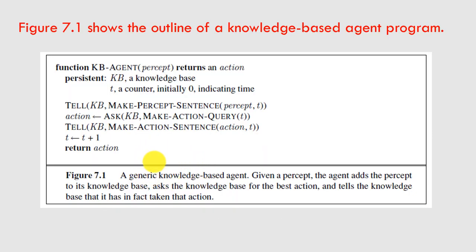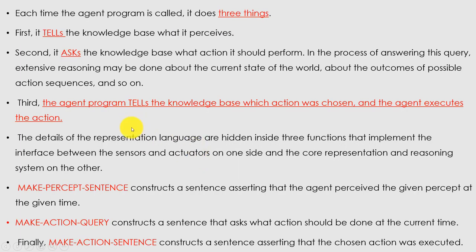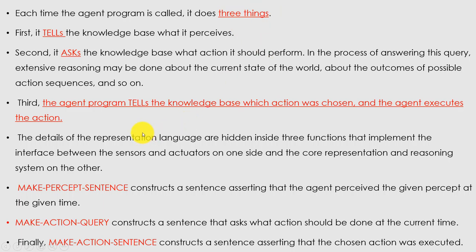This is the algorithm for the knowledge-based agent. The function name is KB-Agent, percept is the input, and it returns the action. Each time the agent program is called, it does three things: first, it tells the knowledge base what it perceives; second, it asks the knowledge base what action it should perform; and third, the agent program tells the knowledge base which action was chosen and the agent executes that action. So tell, ask, and action are the three key things needed.